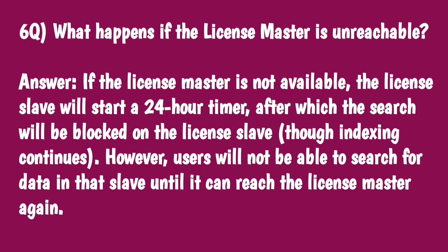What happens if the license master is unreachable? If the license master is not available, the license slave will start a 24-hour timer, after which the search will be blocked on the license slave, though indexing continues. However, the user will not be able to search for data in that slave until it can reach the license master again.